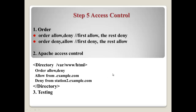Apache's access control is very simple. Number one: order allow deny, or order deny allow. Allow deny means first allow, and the last will be denied to access. And order deny allow means first deny, and then the last will be allowed to access.